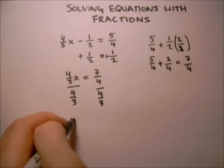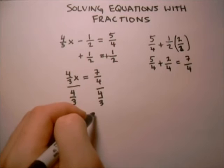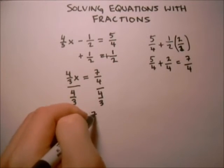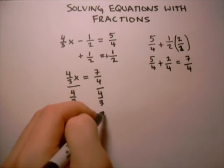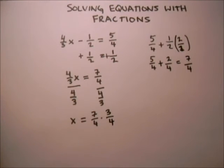So on our left hand side we'll get x. And on the right hand side, when we divide by fractions, what we do is we just invert the bottom fraction or flip it over and multiply. So we get 7 fourths times 3 fourths.